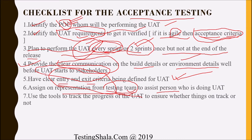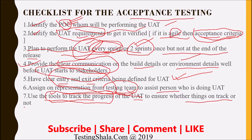The seventh checklist item: it is always good to use tools to track acceptance testing progress. Gone are the days of using Excel spreadsheets — you should use a good test management tool to track the UAT progress and ensure that business people or end users are on track with their executions.